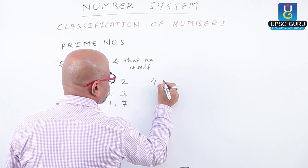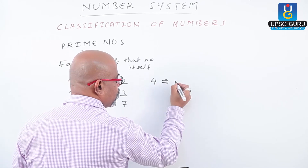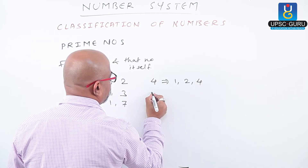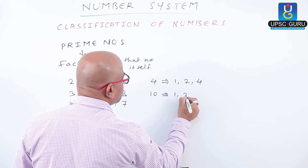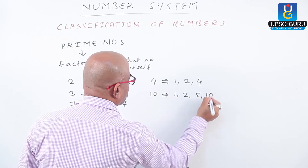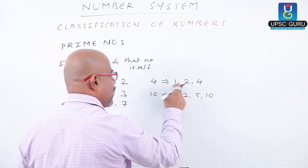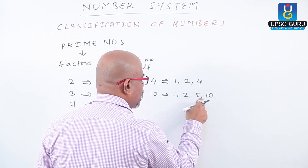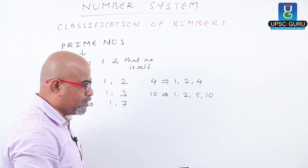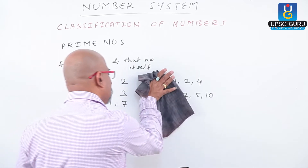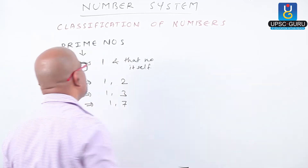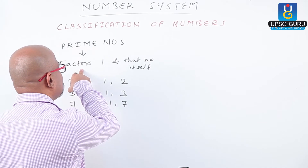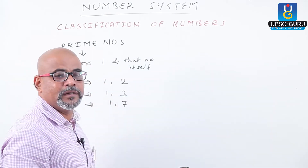If we check 4, factors of 4 are 1, 2, and 4. If we check 10, factors are 1, 2, 5, and 10. Other than 1 and 4, here 2 is one more factor. Other than 1 and 10, here 2 and 5 are two more factors. Therefore, these are not prime numbers. Prime numbers are those which have factors only 1 and that number itself.